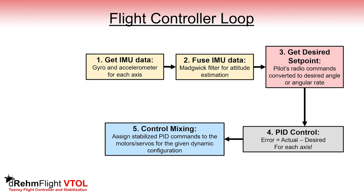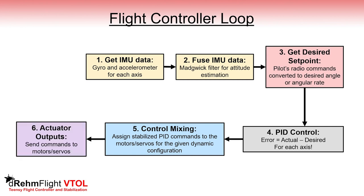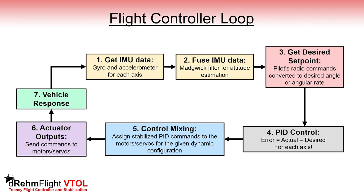After this, the stabilized output from the controller can be assigned to the actuators. This process is referred to as control mixing, where a motor or servo is essentially told how to react to changes in the vehicle's orientation. Then these commands are finally sent to the actuator output pins on the flight controller, leading the vehicle to respond. We then repeat this process over 2000 times per second, creating a feedback loop.